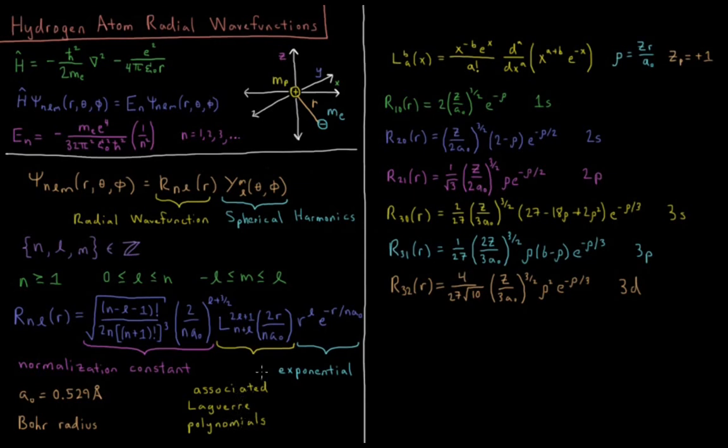So the associated Laguerre polynomials, they have a generating function that we could use. Usually we're just going to look them up in a table if we need them, but you could derive them if you needed to. So L_ab of x is equal to x to the minus b e to the x over a factorial. Then you take the ath derivative with respect to x of the quantity x to the a plus b times e to the minus x.